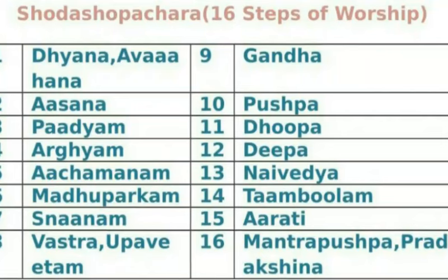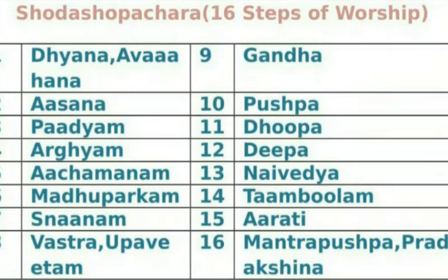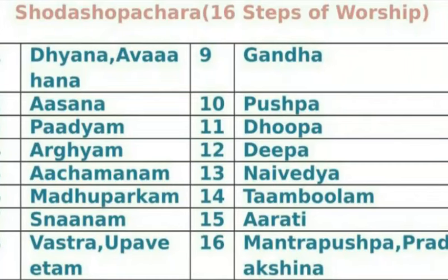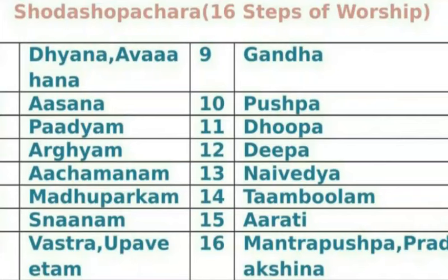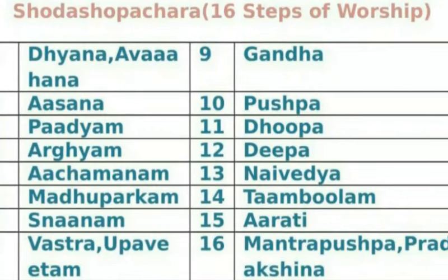Number 6 is Madhuparkam, which means we have to offer a sweet liquid which includes honey to the God for drinking. Number 7 is Nanam — we have to offer God a bath. Number 8 is Vastra and Upavitam, which means we have to offer clothes for the God. Like a guest, we have to treat the God — God is the guest to our house, so we have to do all the hospitality.